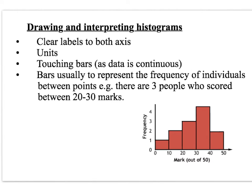Here's an example of a histogram. These aren't studied very much in biology, but you need to know how to do them. Rules for drawing graphs include clear labels to both axes — here we have the mark out of 50 and the frequency on the side. The bars have to be touching because the data is continuous, going from 0 all the way up to 50 on a continuous scale. The bars represent the frequency of individuals between points — for example, three people scored between 20 and 30. You usually use a histogram after completing a frequency table.